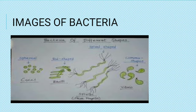The third shape is vibrio — comma-shaped — and its example is Vibrio cholerae. The fourth one is spirilla, with a spiral shape, and its example is Treponema pallidum.